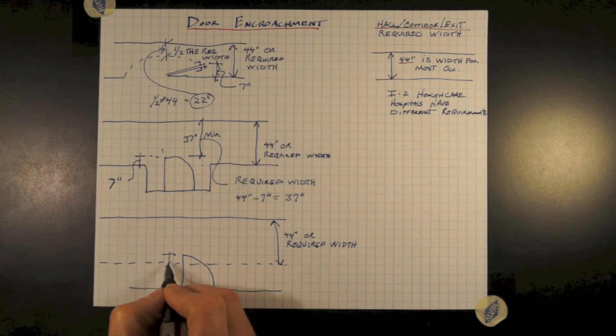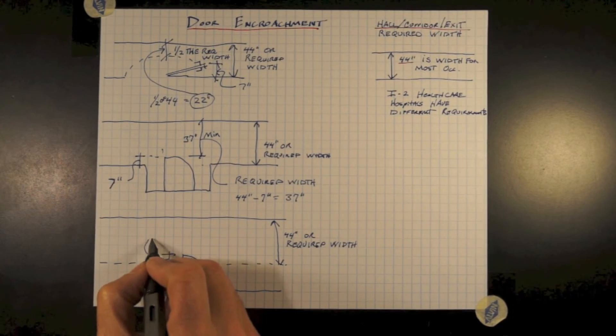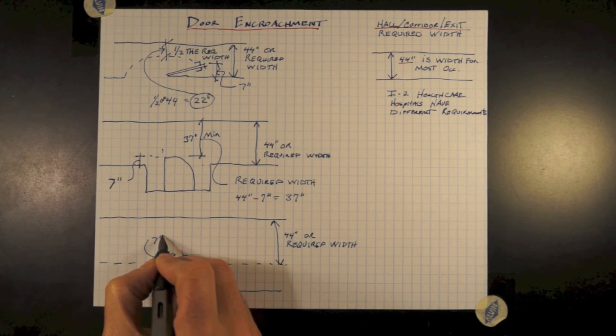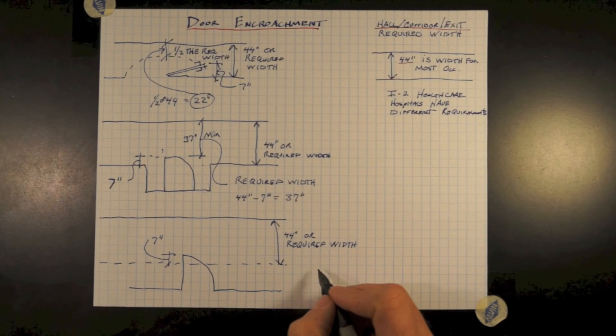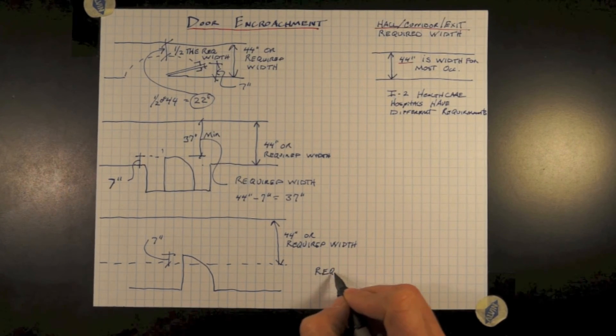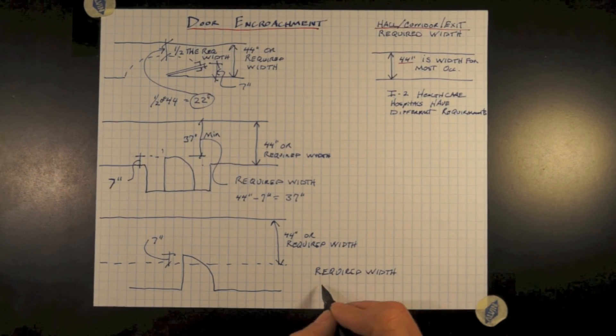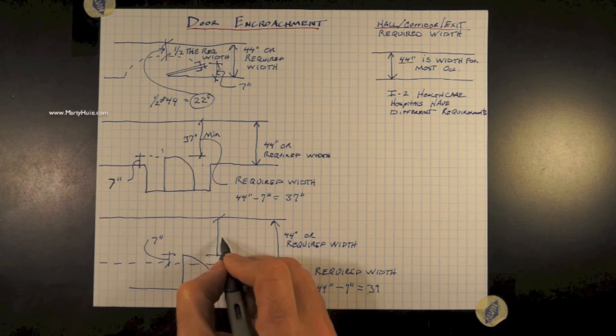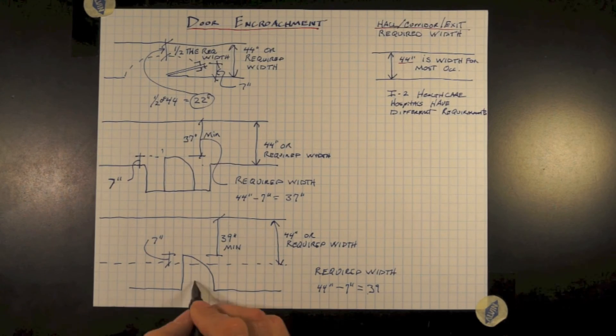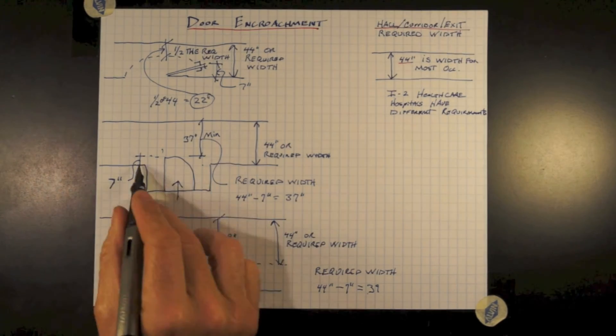The corridor, hallway needs to be wider, but the door also is allowed to protrude into that required width by 7 inches. So taking our required width minus 7 inches, again, that leaves us with 37 inches clear opening.